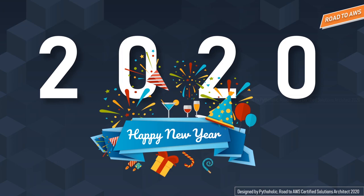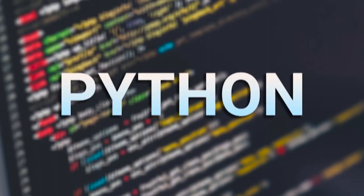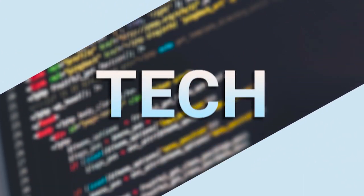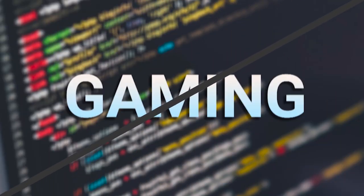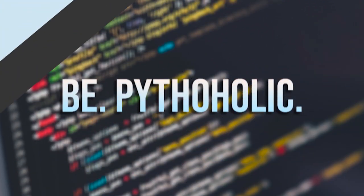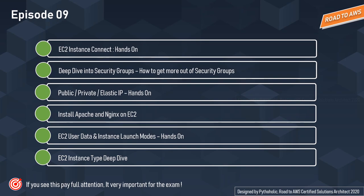I would want you to watch the initial episodes of the series to get a better context of the topic we are going to discuss today. So without wasting any more time, let's begin the first tutorial for 2020. In today's chapter we will discuss a lot of things. You can see the bullseye icon — pay full attention to that line, as it is a marker for points that are very critical for the certification exam.